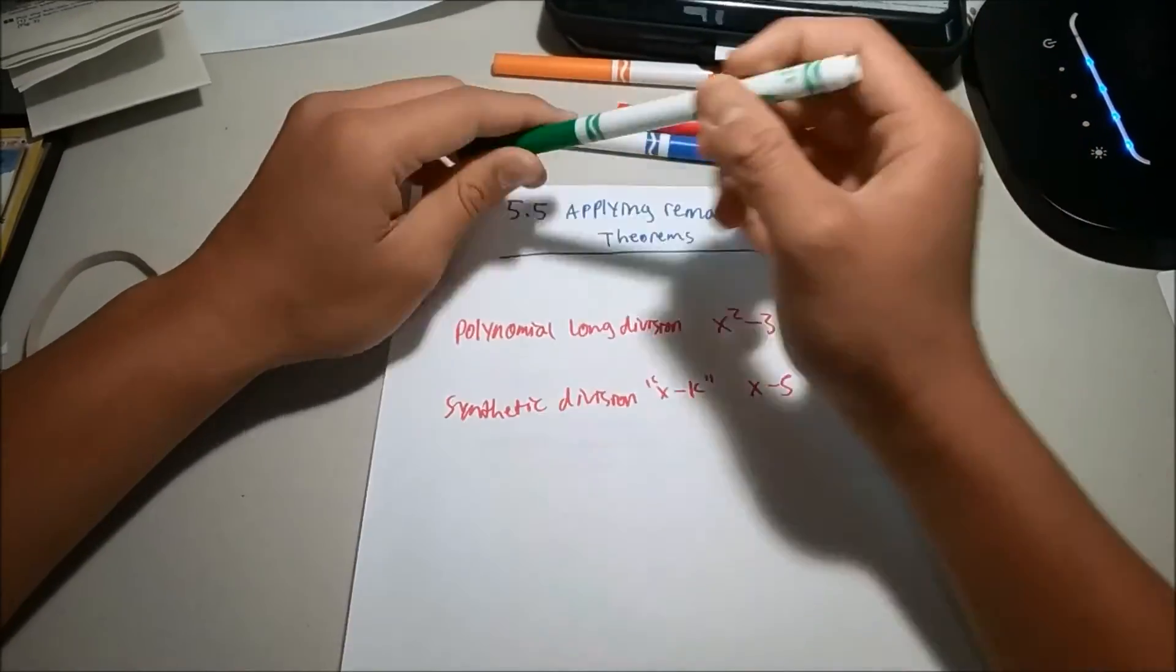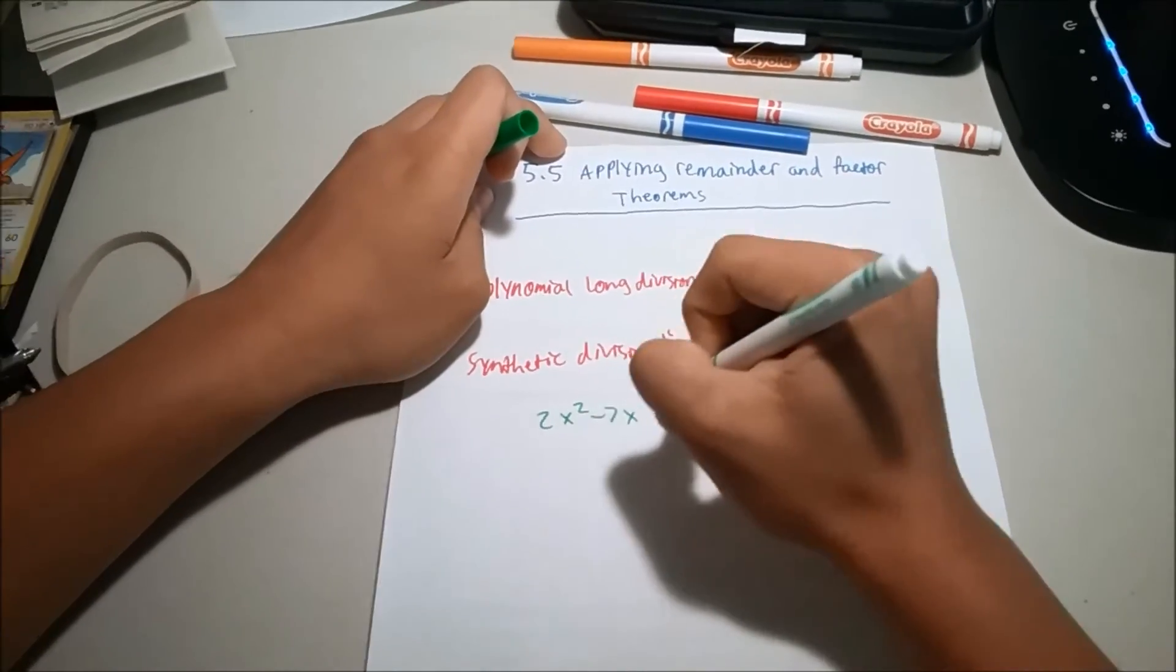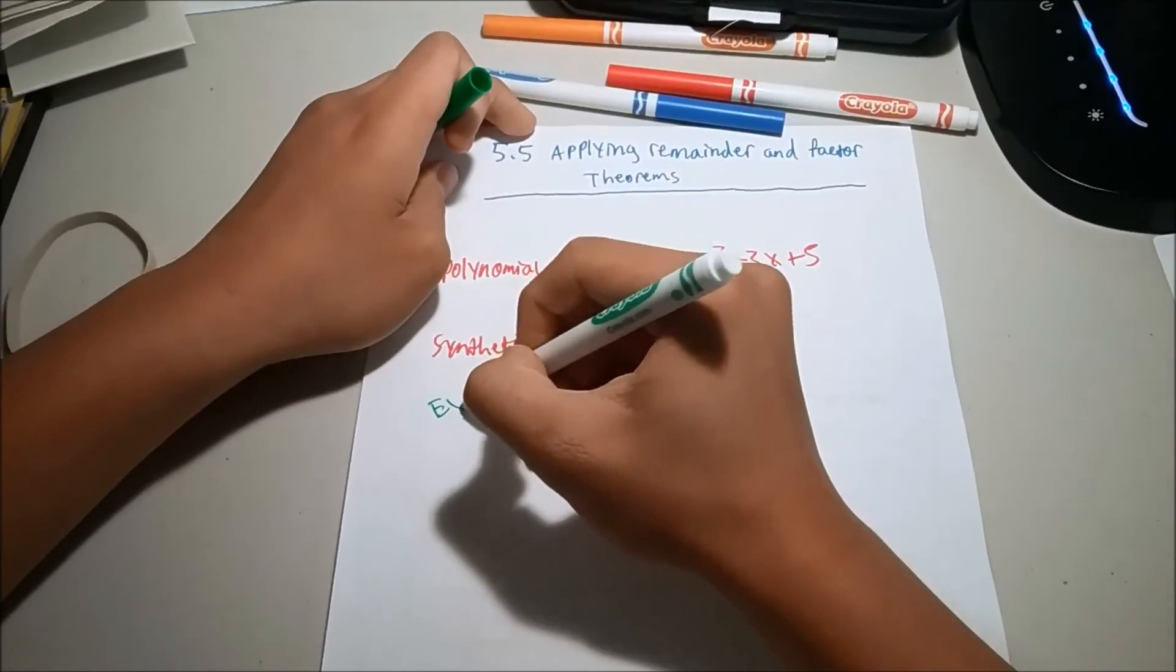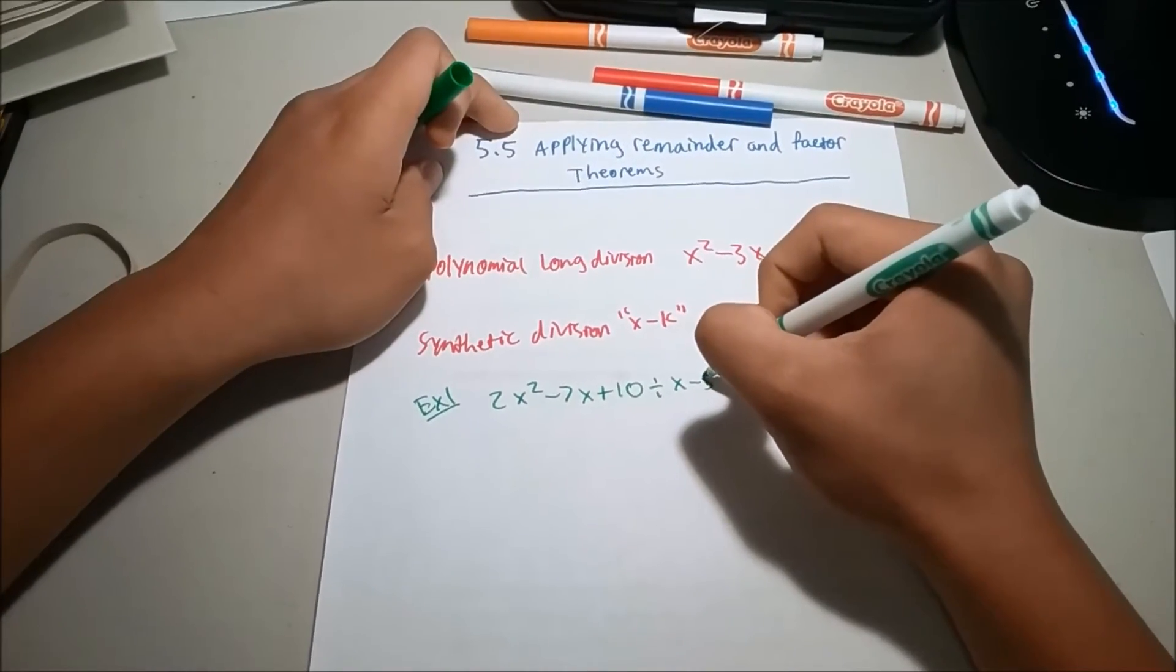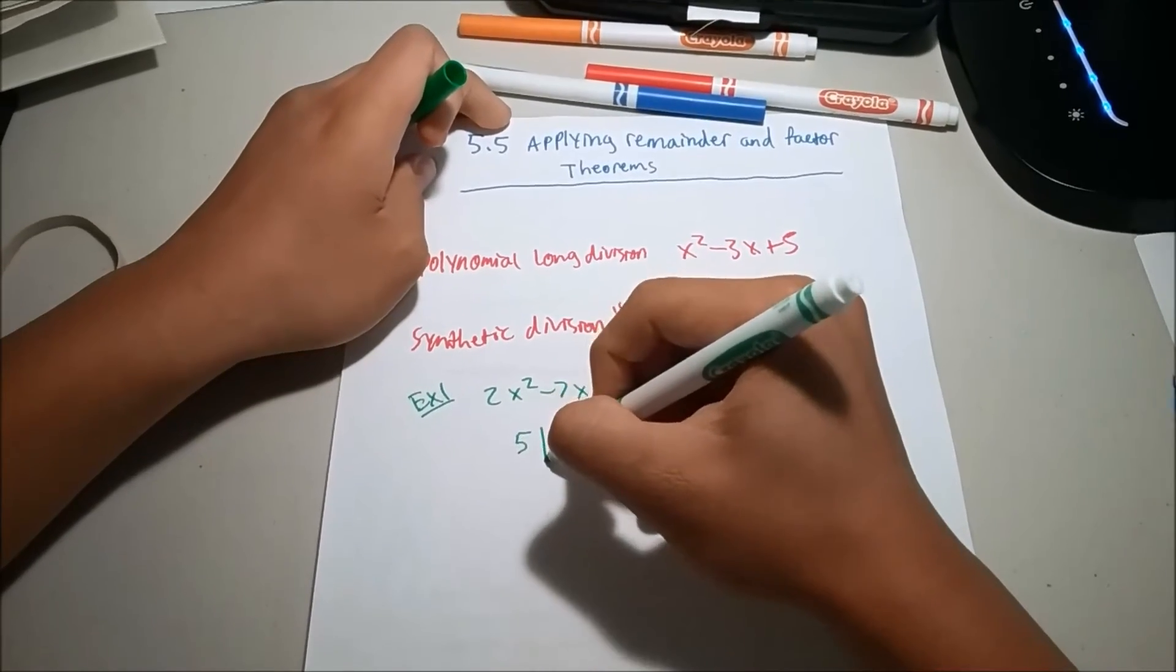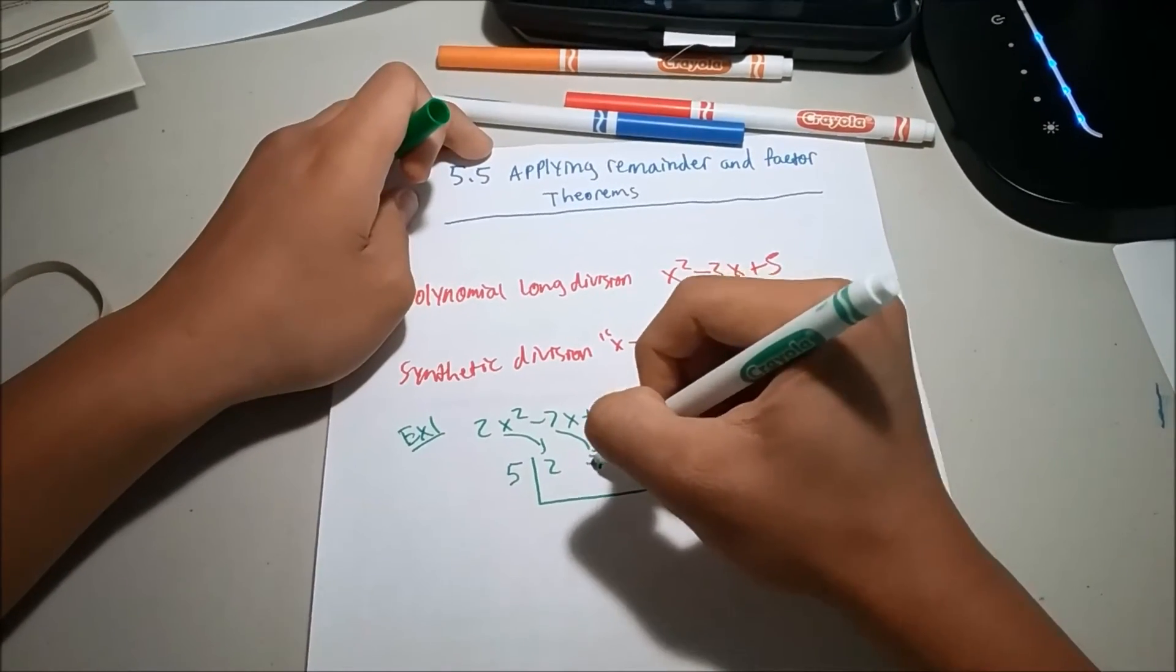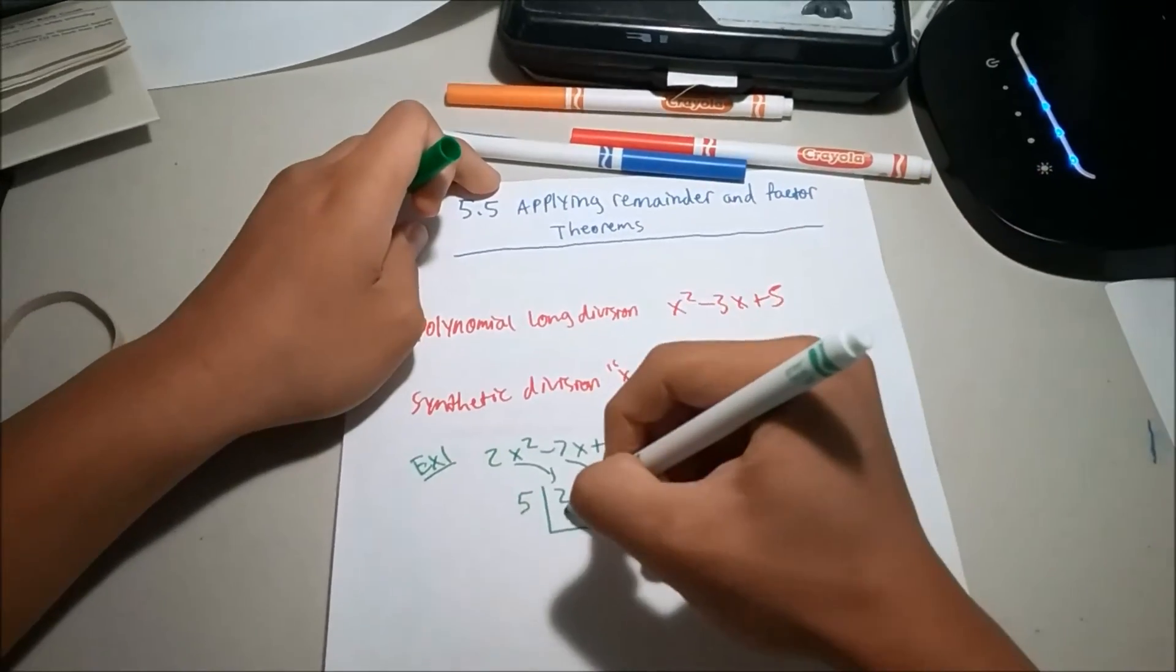The first example is 2x squared minus 7x plus 10 divided by x minus 5. And we'll call this example 1. So, since this is x minus 5, we'll change it to 5. And don't forget the L form. And we'll plug 2 in here, negative 7 in here, and 10 in here.